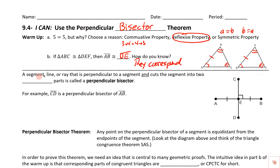A line segment, ray, or line that is perpendicular to a segment and cuts the segment into two congruent parts is called a perpendicular bisector. In the example, segment CD is perpendicular to segment AB. CD is the perpendicular bisector because it does two things: it's perpendicular — we've got that right angle mark — and it cuts AB in half, giving two equal pieces.